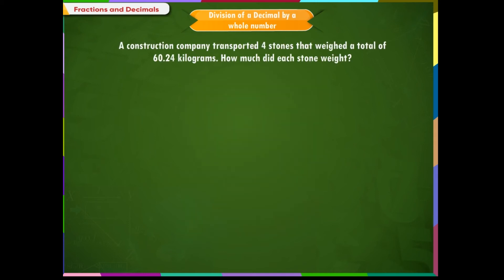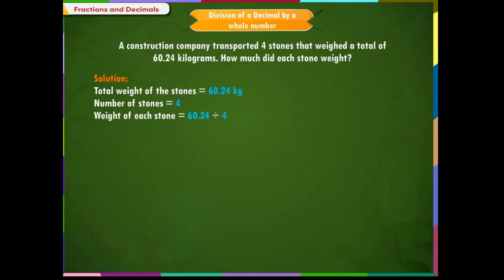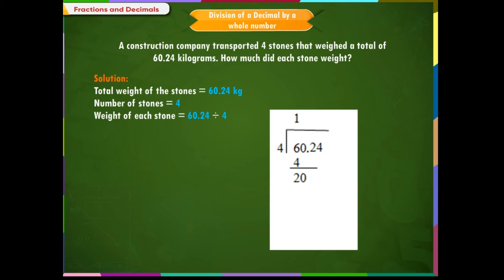Example 4: a construction company transported four stones that weighed a total of 60.24 kilograms. How much did each stone weigh? Solution: total weight of the stones is equal to 60.24 kg. Number of stones is equal to 4. Weight of each stone is equal to 60.24 divided by 4. Ignoring the decimal point, we will divide 6024 by 4. Since there are two places of decimal in the dividend, we put the decimal point by counting two places from the right. Therefore, each stone weighs 15.06 kg.